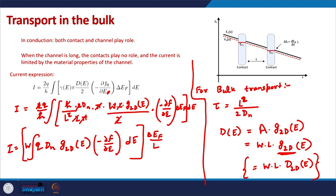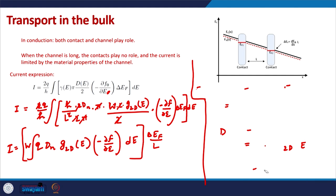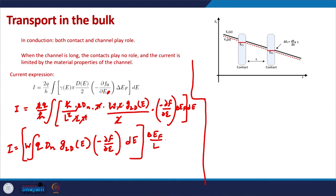So this is what we can write from the expression of the current. We now have δE_F / L here. This was used in the diffusive transport case where δE_F was the difference in the Fermi functions of the left and right contacts. In the bulk transport case, δE_F / L can be written as essentially the gradient of the quasi Fermi levels.